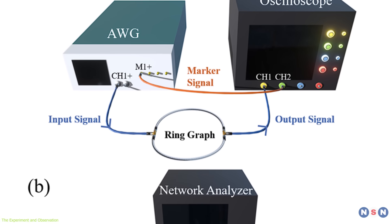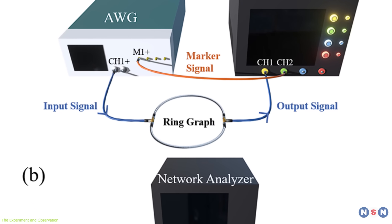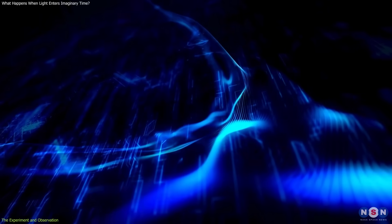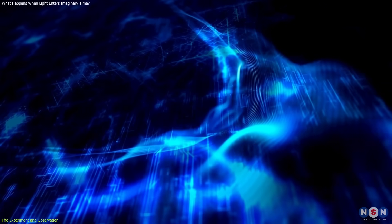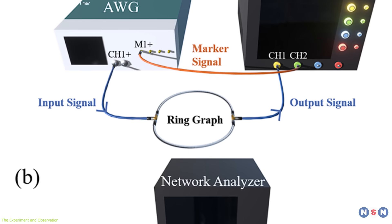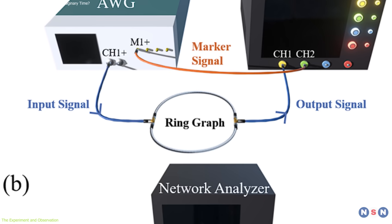This layout, forming what physicists call a ring graph, allows researchers to study how electromagnetic waves behave as they loop continuously through a closed path. Into this ring, the team injected microwave pulses.